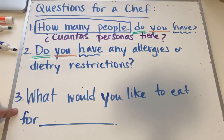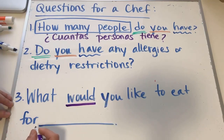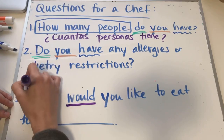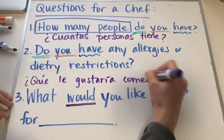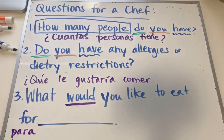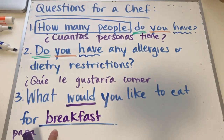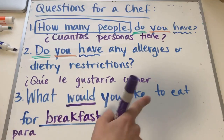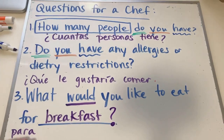And then number three, we are using the word 'would.' In Spanish — le gustaría. No decimos qué le gustaría desayunar o almorzar, decimos qué le gustaría comer para, y el nombre de la comida — por ejemplo, desayuno, almuerzo, cena. So: 'What would you like to eat for breakfast?' — qué le gustaría comer para el desayuno.